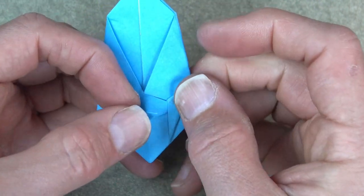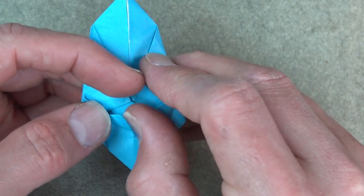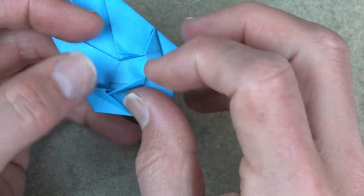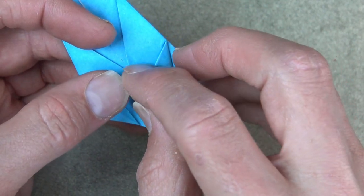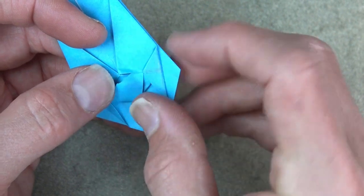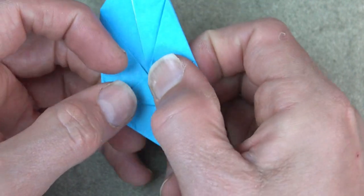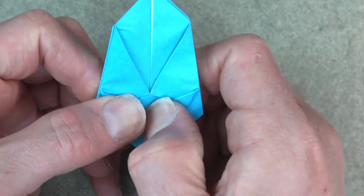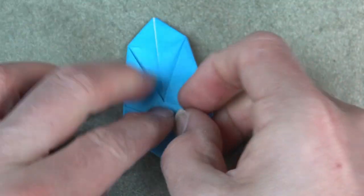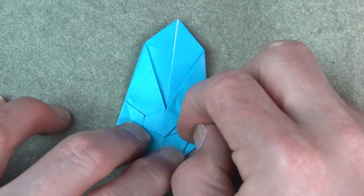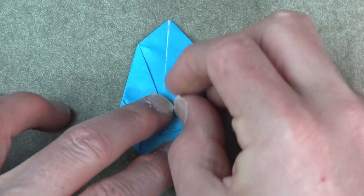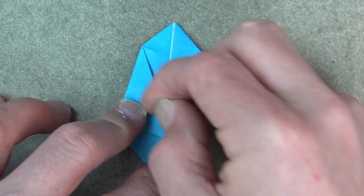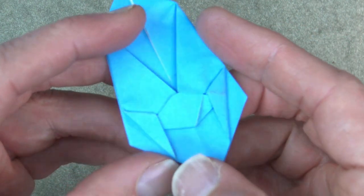And insert this flap into the pocket. So you have to just kind of open it, it'd be easier to open it with a pencil but I'm going to just try to slip it in there. Like that. And flatten it all nice and sharply.